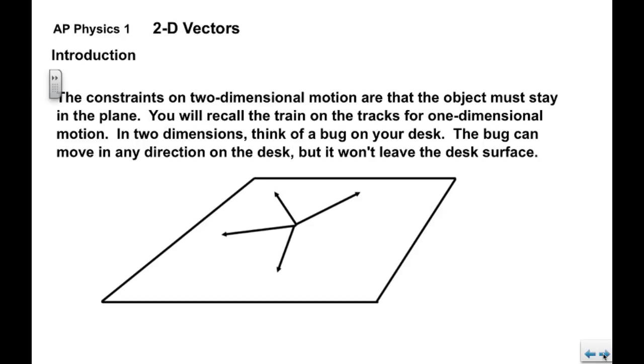So the constraints on two-dimensional motion are that the object must stay in the plane. You remember the train tracks for one-dimensional motion. In two dimensions think of your desk surface and think of a bug that's on the desk. The bug can move in any conceivable direction on the desk but it can't come up off the surface.